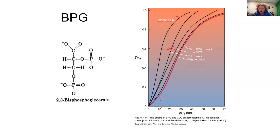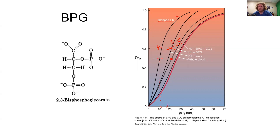When we add CO2 to stripped hemoglobin, the p50 increases — shifts to the right — to about 18 torr. Next, hemoglobin plus only BPG shifts even further to the right. Comparing these lines, BPG has a greater impact on increasing p50 than CO2 alone.